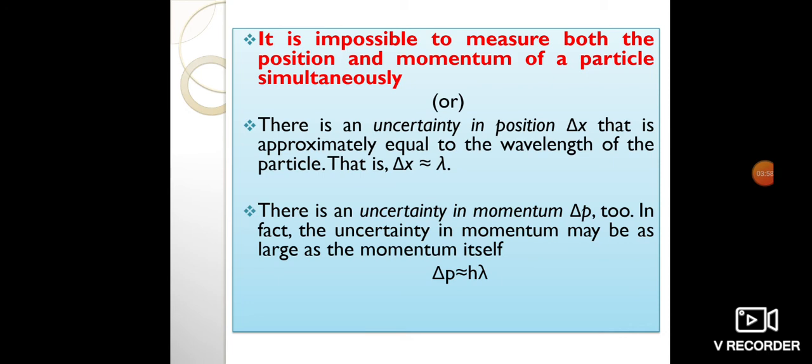The uncertainty in position can be reduced by using a shorter-wavelength electron, since Δx ≈ λ. But shortening the wavelength increases the uncertainty in momentum, since p = h/λ.